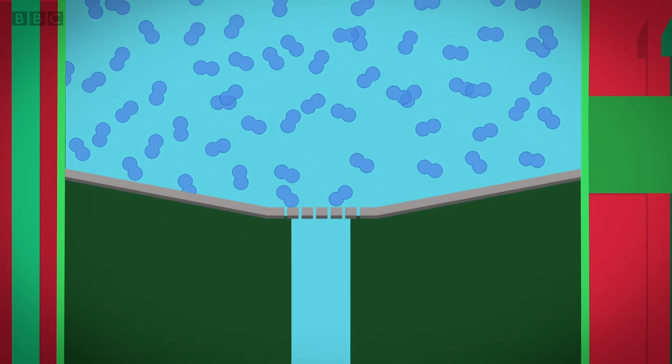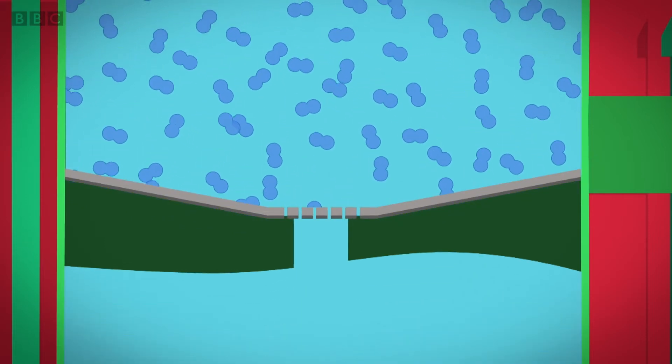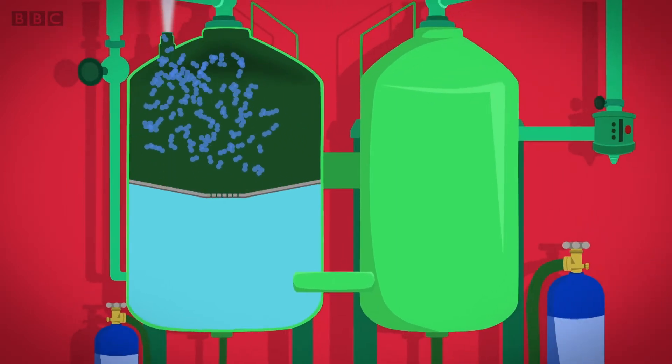The holes are so small that as the water squeezes through them, the oxygen gas escapes, and it's taken away through a vent at the top of the tank. Bye-bye, oxygen!